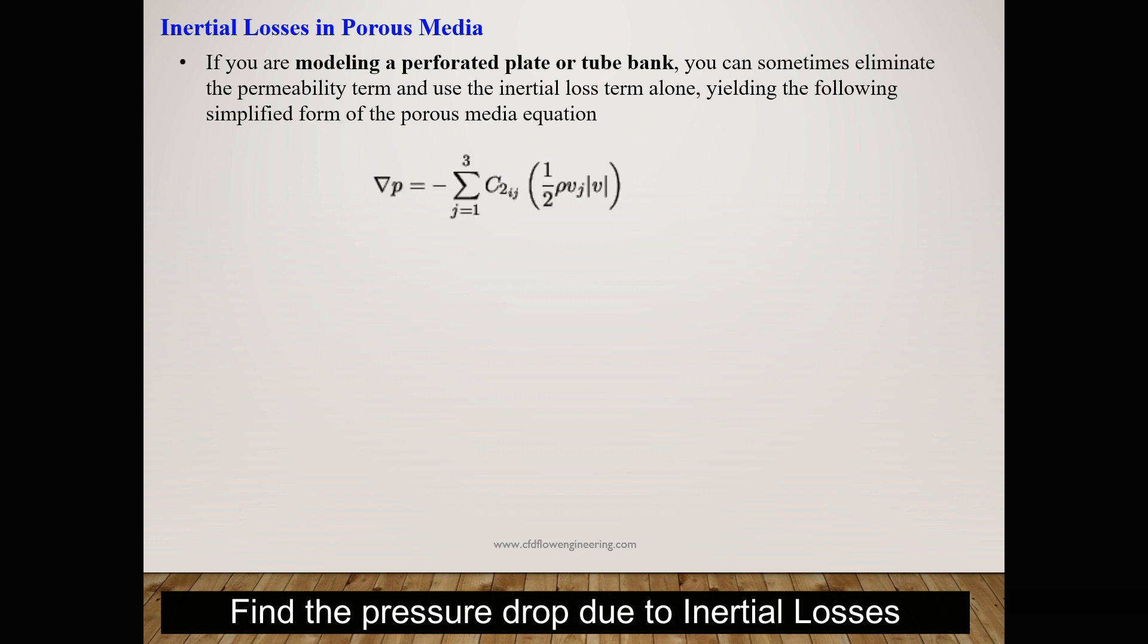For such a case, pressure drop is proportional to the dynamic pressure, half of rho times velocity. Vj is the superficial velocity and V is the magnitude. By integrating this equation in x, y, and z directions, we can find out the pressure drop due to inertia.